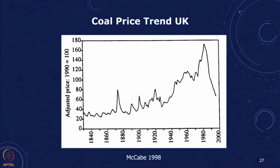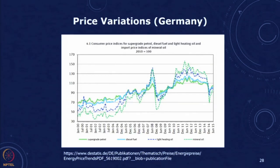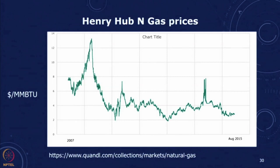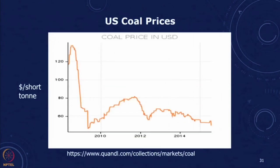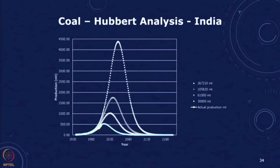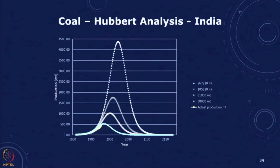We can look at price trends for some fossil fuels — coal price trends in the UK, price variations in Germany, and natural gas price variations. There are fluctuations in these prices, some increasing and some decreasing, without clear long-term trends. We will now try to replicate Hubbert's analysis in terms of the logistic growth curve.